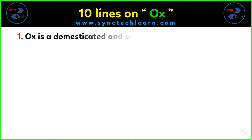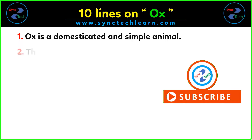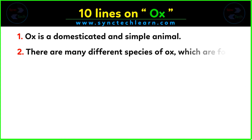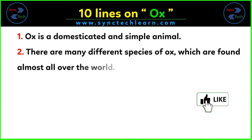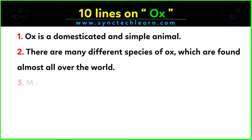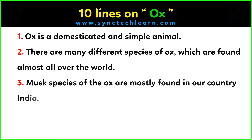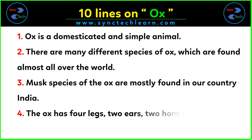Ox is a domesticated and simple animal. There are many different species of ox which are found all over the world. Most species of the ox are mostly found in our country India. The ox has four legs, two ears, two horns, and a long tail.